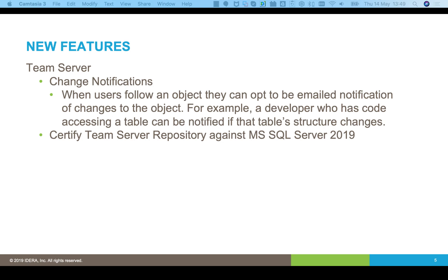This is really useful. If users aren't using Team Server a lot, they can follow an object. For instance, a developer programming against a particular table within Team Server can follow that table and all of the columns within it, or even follow an individual column or a database as a whole. If anything in that model changes, the tool will notify them that the changes occurred and invite them to go and look at the changes within Team Server.